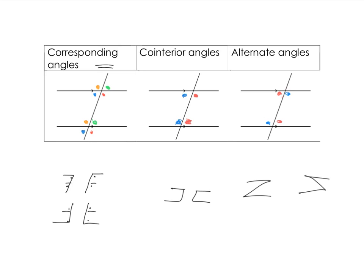For our co-interior, remember we are looking for the U. And these are very easy — there they are. But these are not equal to each other; they add up to 180 degrees.